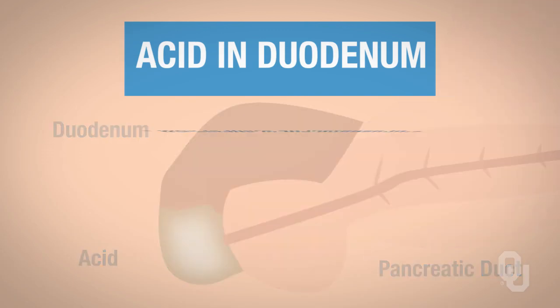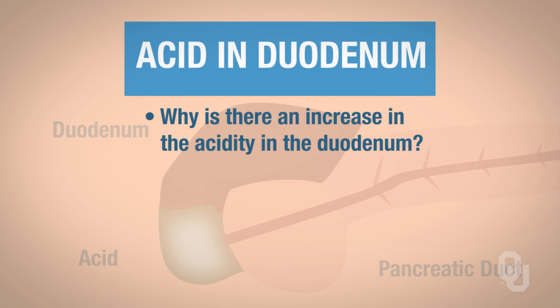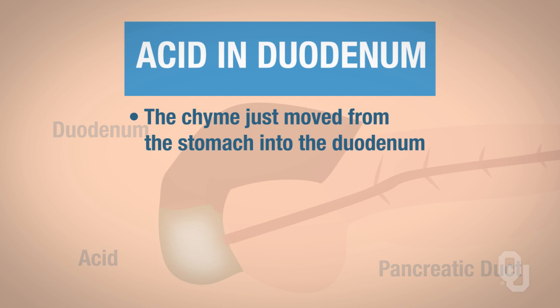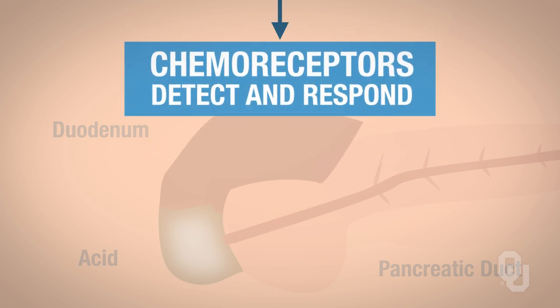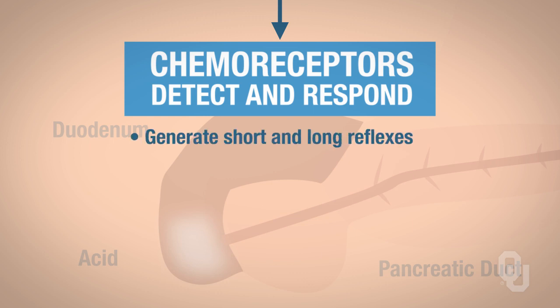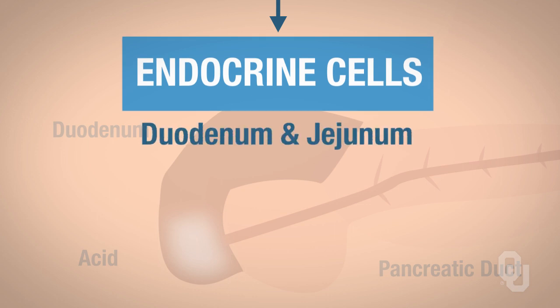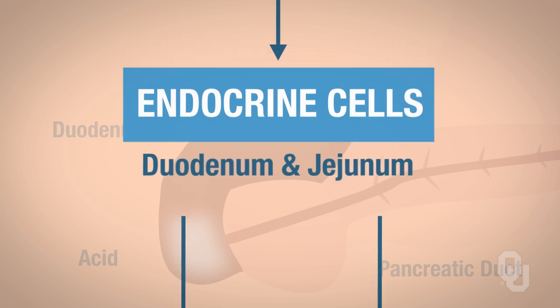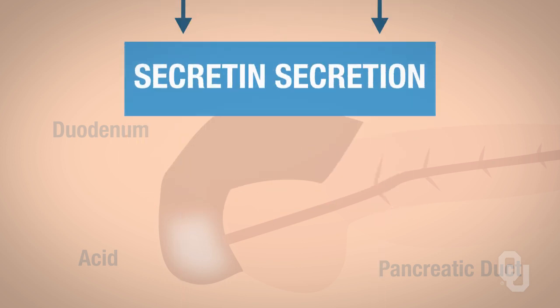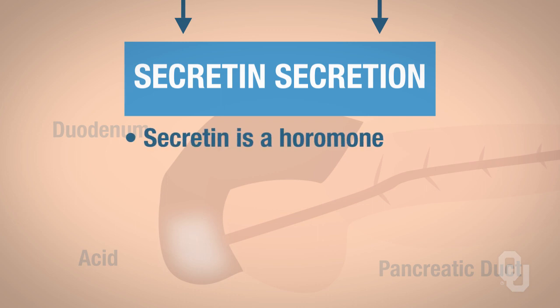We know why there's an increase in the acidity in the duodenum—that's because the chyme just moved from the stomach into the duodenum. Once that acid gets into the duodenum, it gets detected by the chemoreceptors, and they're going to generate some short and long reflexes. Ultimately we're going to stimulate endocrine cells of the duodenum and the jejunum, and that's going to cause the synthesis and secretion of secretin.